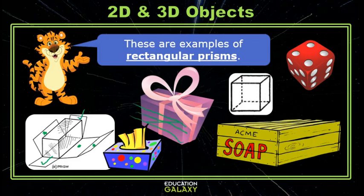Okay, wait a minute. These look like cubes. They are. But since squares are special rectangles, cubes are special rectangular prisms.